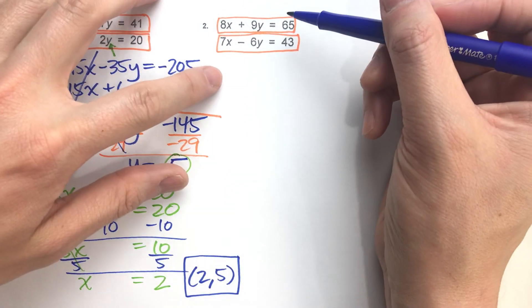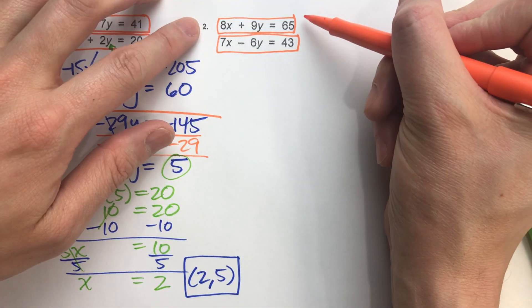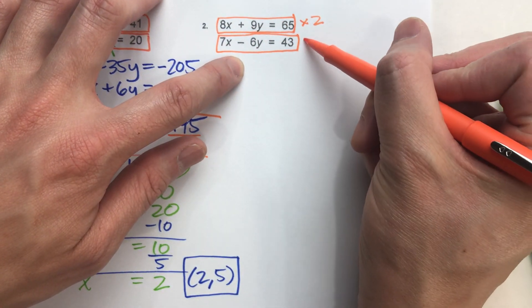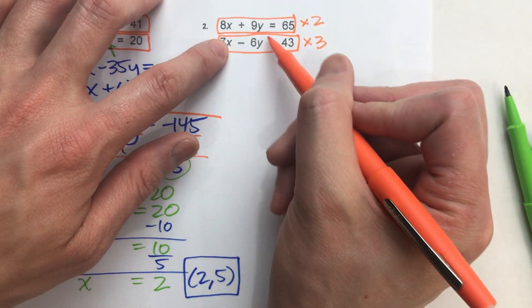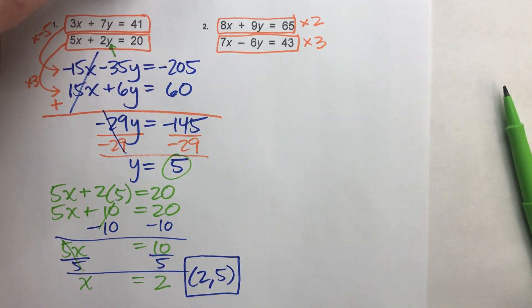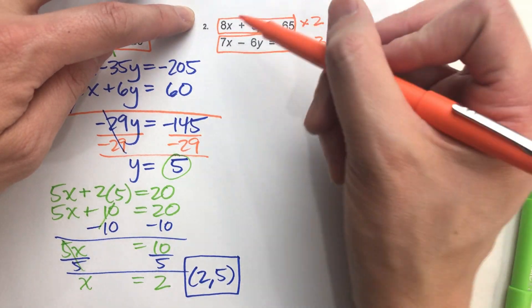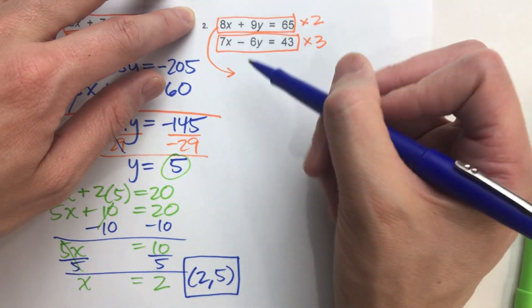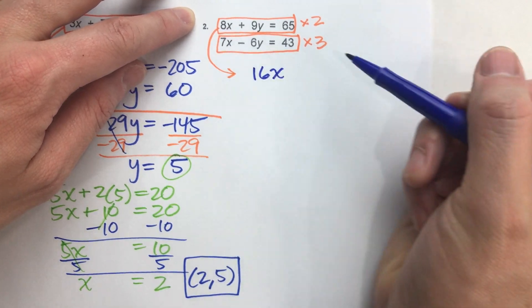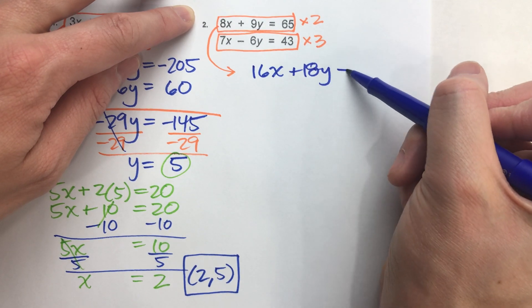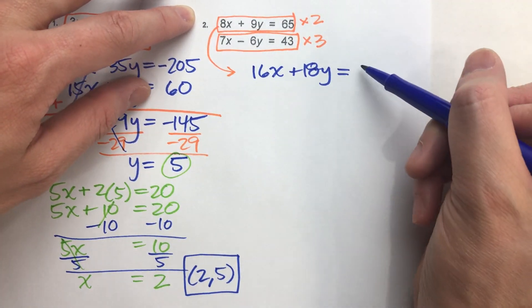So if I multiply that top equation by 2, I'll get positive 18. And if I multiply the bottom equation by 3, I'll get negative 18. And then they'll match up and I can eliminate them. So this will be perfect. So let's do that. This top equation, 8x times 2, 16x, 9y times 2, 18y, and 65 times 2 is 130.